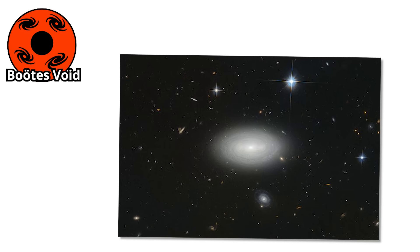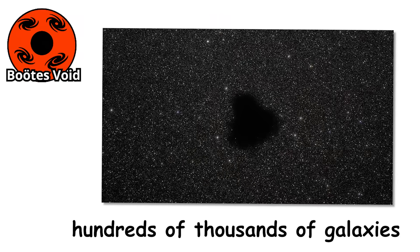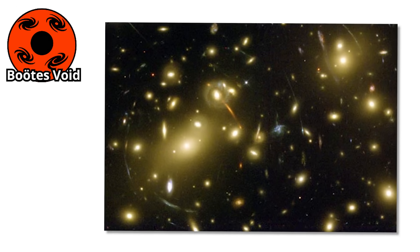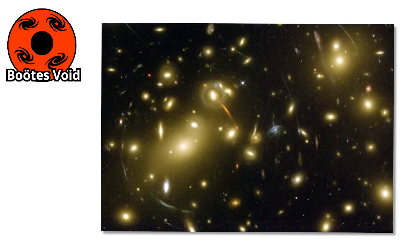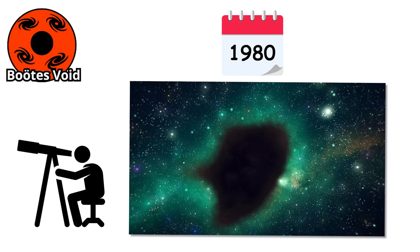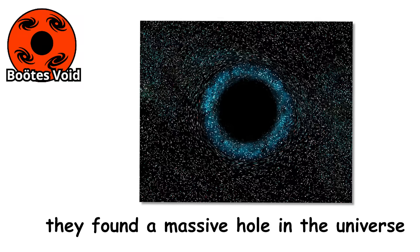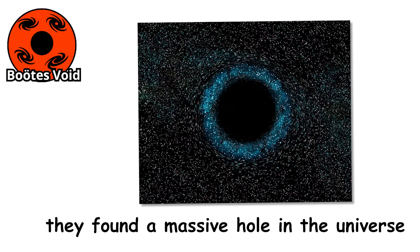This region of space is over 300 million light-years across and contains almost nothing. While a typical region that size would be packed with hundreds of thousands of galaxies, the Boötes Void holds fewer than 60. That is not just empty, that is suspiciously empty. Astronomers first discovered it in the 1980s while mapping galaxy distributions across the universe. When they reached this region, they expected the usual cosmic clutter. Instead, they found a massive hole in the universe, the kind of hole that makes scientists double-check their instruments.